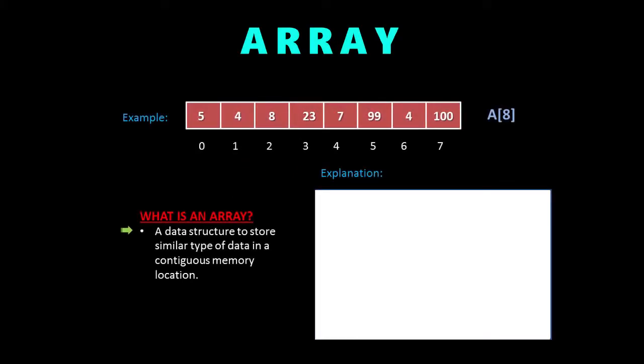Hi friends, GT Coding here. In this tutorial we are going to learn about arrays. An array is basically a data structure to store similar type of data in a contiguous memory location. Array is a linear data structure, which means that all the items in the data structure are arranged sequentially. One way to do this is to store items sequentially in memory itself — for example, storing an item at memory location 200 and the next at 201.